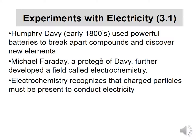Looking at some of the experiments with electricity early on, Humphrey Davy used powerful batteries — bigger ones with more disks — to break apart compounds and discover new elements. Back in the early 1800s, we had things we didn't know what they were made out of, and one of the best ways to figure that out is to break it into pieces. Davy had a student, Michael Faraday, who is very well known for his work in electrochemistry and has some numerical values named after him.